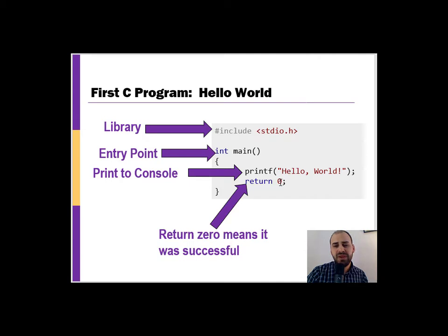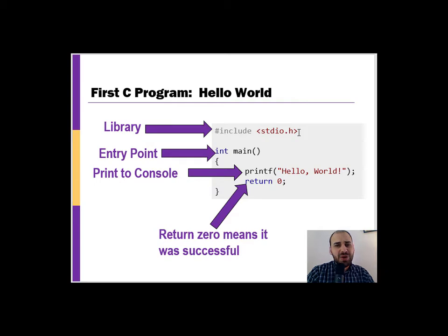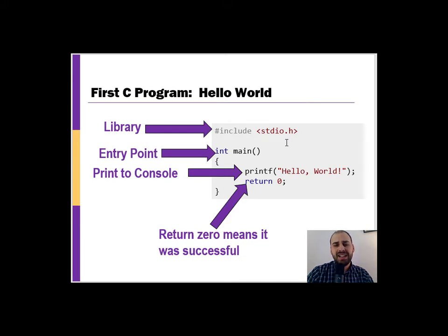One other thing we need is a library. Libraries contain code written by others — you don't want to write everything from scratch. Libraries allow us to reuse code other people have already written. We include libraries at the top of our program using pound-include. We'll talk more about syntax — the grammar of the language — later on.